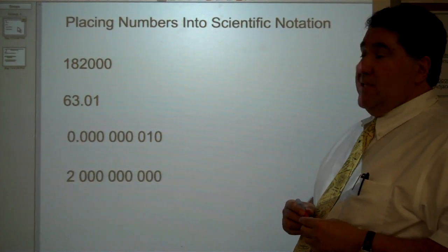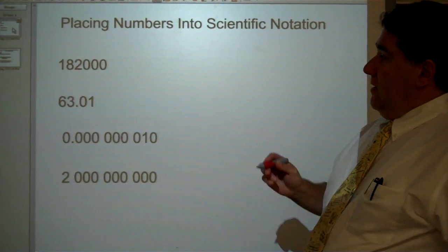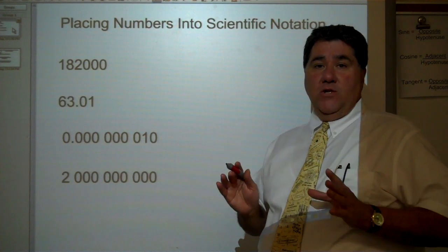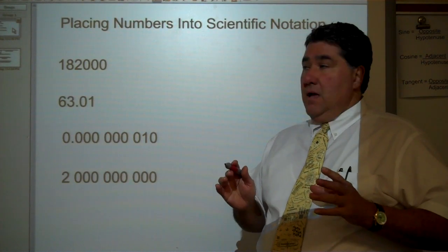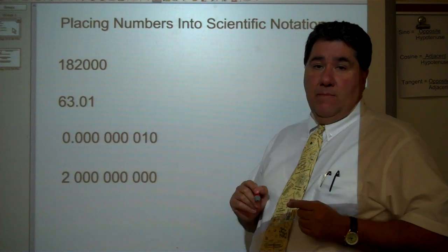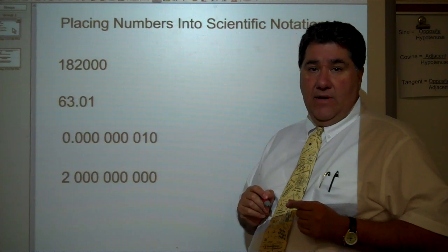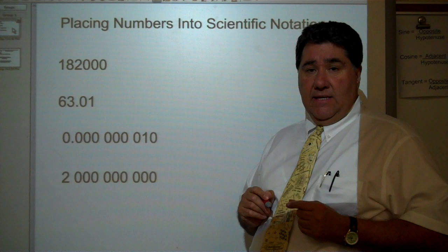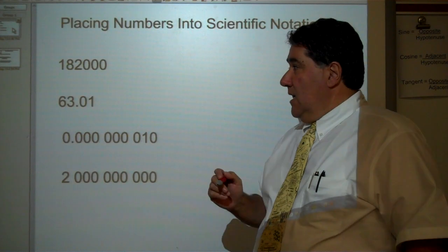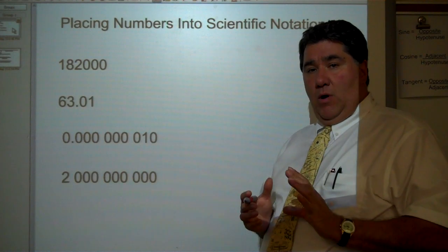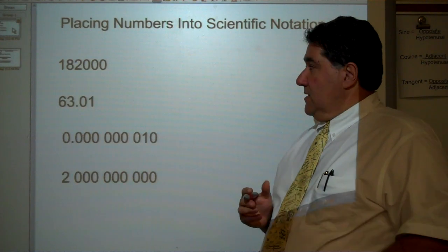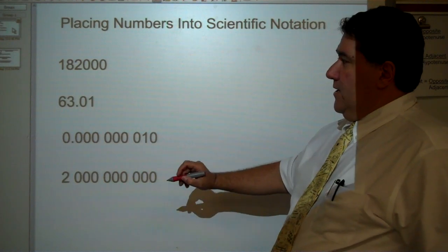We're going to place some numbers here into scientific notation. You hopefully have already watched the presentation on how to make significant figures, and you need to know how many significant figures you have in the number before you can place it into scientific notation. Scientific notation is to deal with very large numbers and very small numbers, many decimal places. So let's start with these four over here.